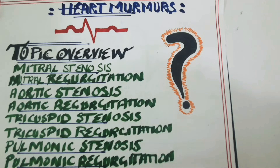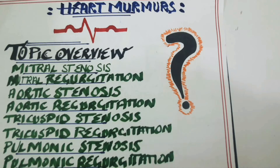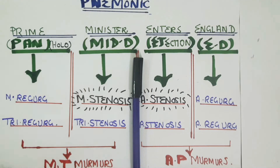So for this, we will study a mnemonic, and because of that mnemonic, you will be able to diagnose the scenario within no time. The mnemonic for murmurs is now in front of you. You are seeing that there are 4 words of a sentence written.